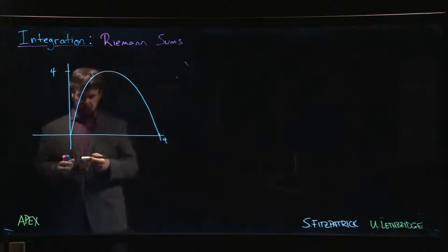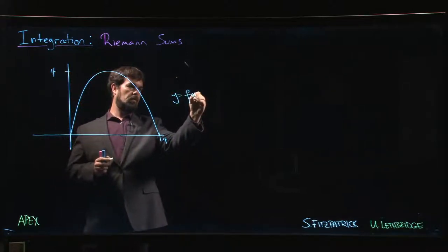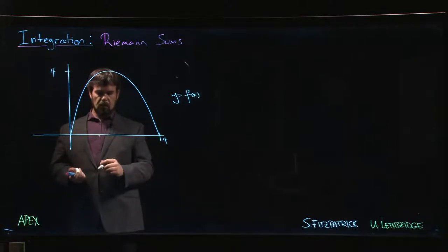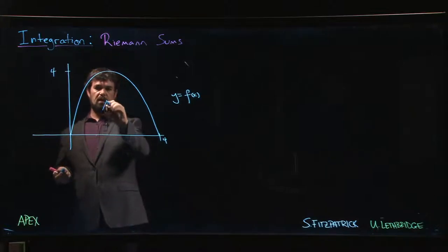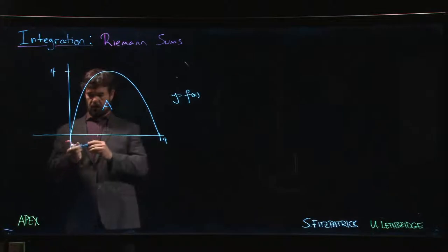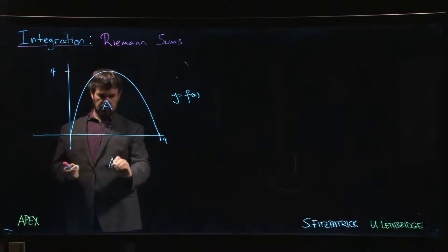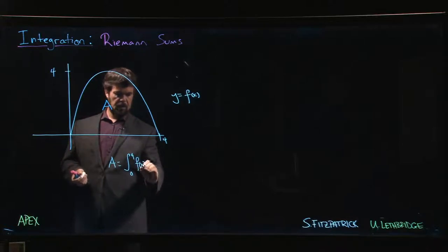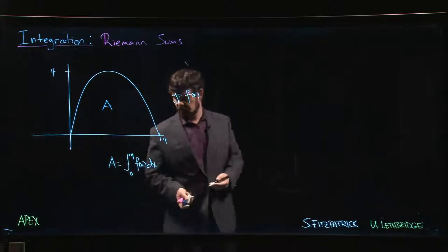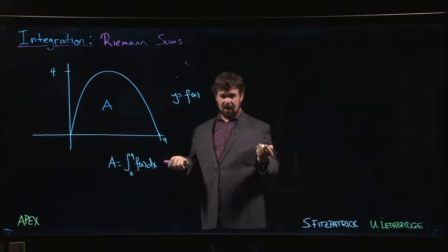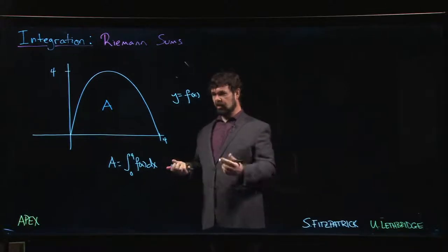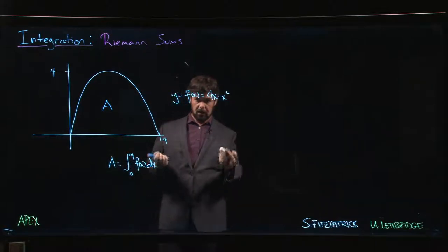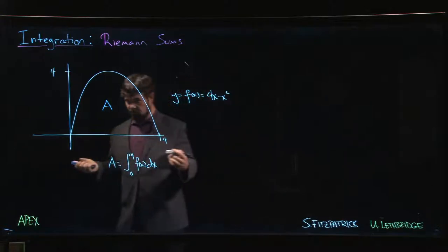Here's the graph of some function — y equals f of x. In the textbook they specify the function like 4x minus x squared, a parabola. We want to calculate this area under the curve. We know the answer should be the integral from 0 to 4 of f(x) dx. This is how we define the definite integral — as giving us this area. But that's not a very useful answer yet, because how do I actually calculate that?